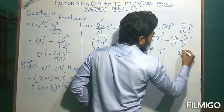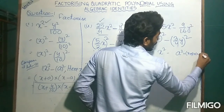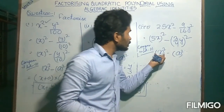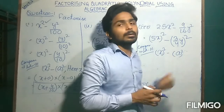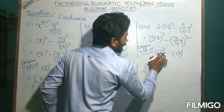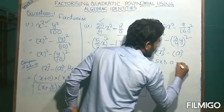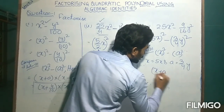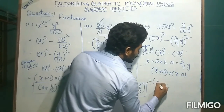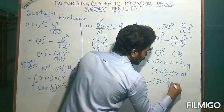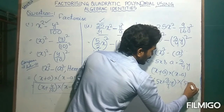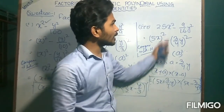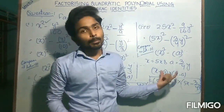From identity 3, the value of x is 5x and a is 3y/4. The formula of x² − a² is (x + a)(x − a). So in place of x put 5x, and in place of a put 3y/4, giving (5x + 3y/4)(5x − 3y/4). Here also we convert that quadratic polynomial into the product of two linear polynomials.